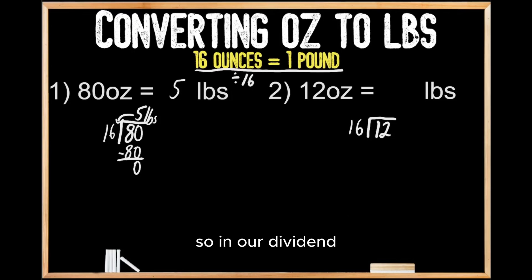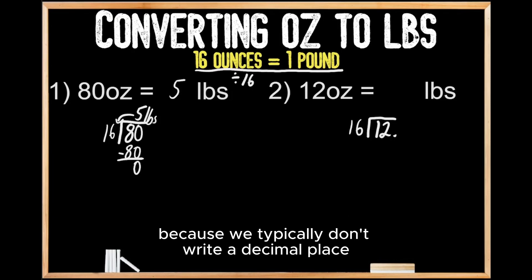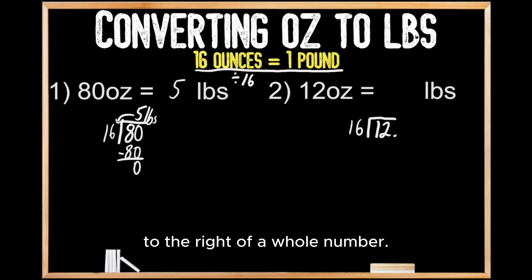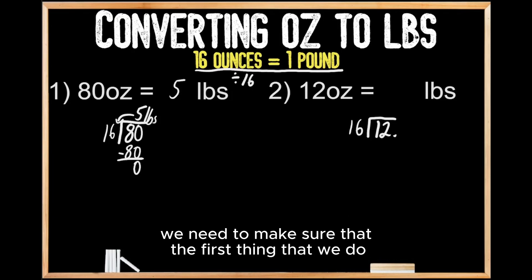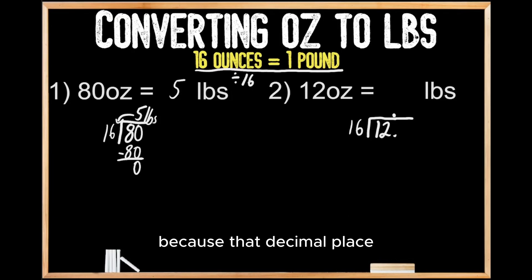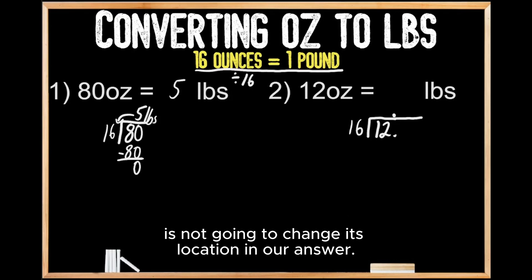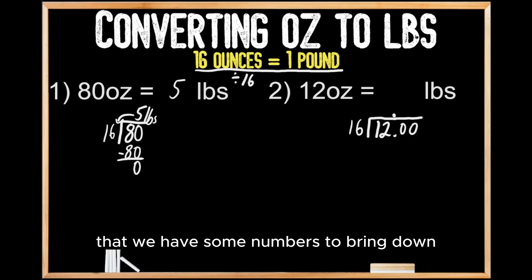In our dividend, or the number that's being divided, there is a decimal place to the right of the whole number — it's just not written because we typically don't write a decimal place to the right of a whole number. But since we are going into the decimal places for this division problem, we need to put a decimal place in the exact same location up top in our answer, because that decimal place is not going to change its location. Now we can add some zeros so that we have some numbers to bring down.